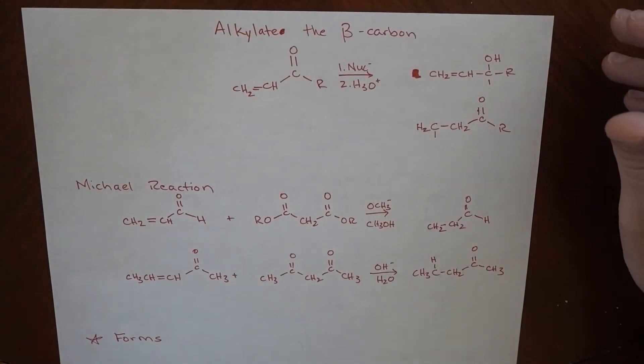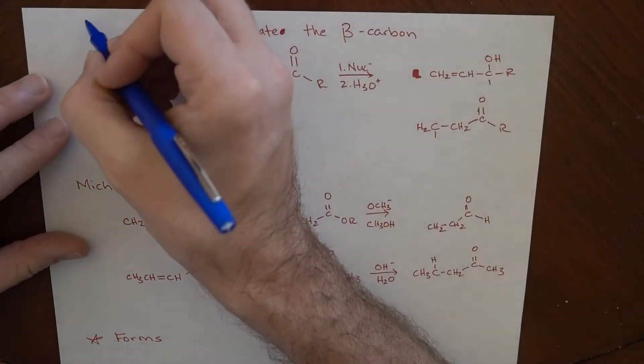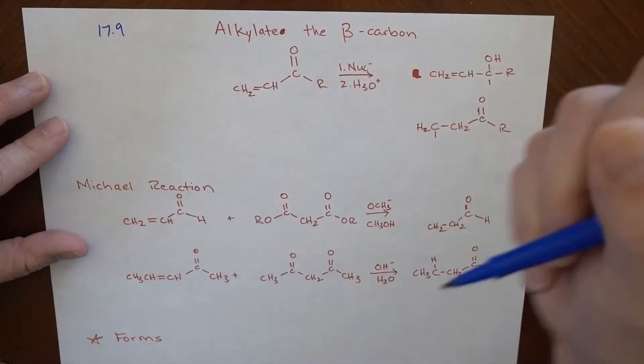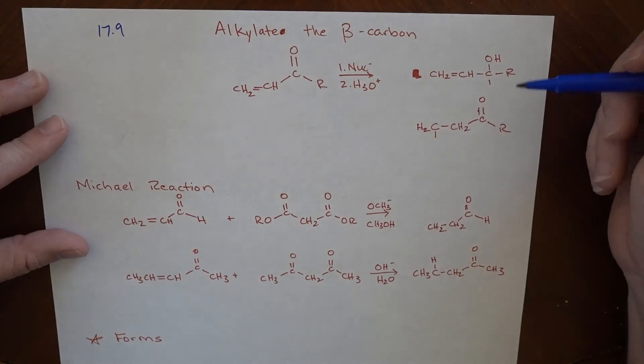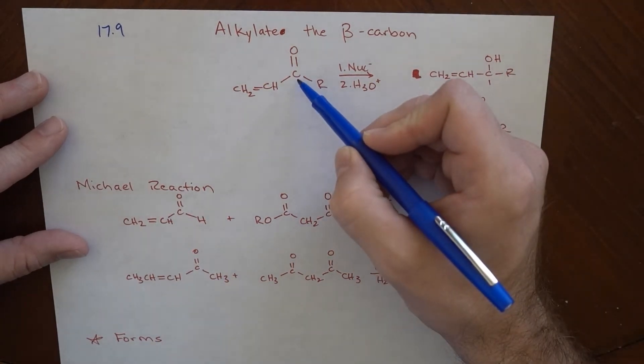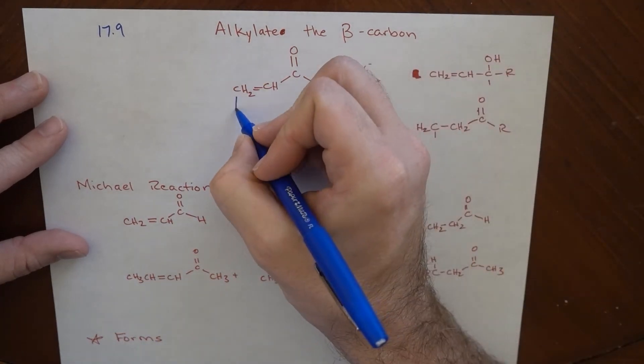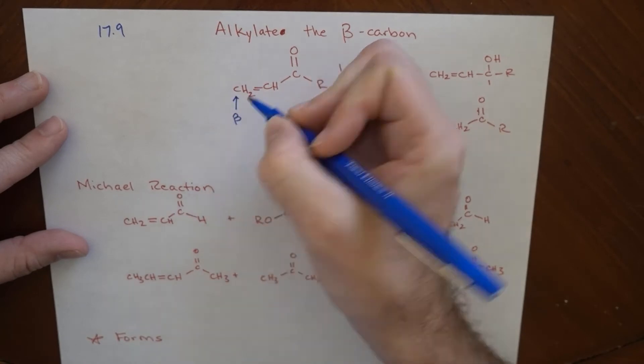So today we're going to go over alkylating the beta carbon, which really deals with section 17.9 if you're following along in Bruce. So the beta carbon - here's our carbonyl that makes this the alpha carbon, and this is the beta carbon.